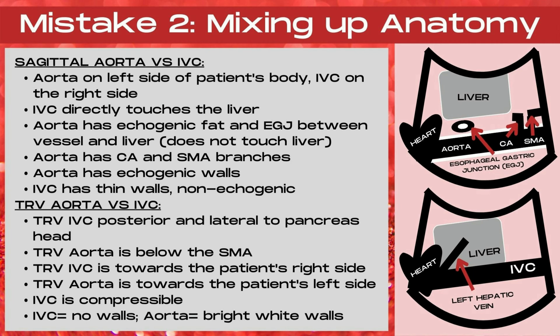Also look for the branches. The aorta has the celiac axis and also the superior mesenteric artery branches. The aorta is also going to have echogenic walls, while the IVC is going to have thin walls that are non-echogenic. We call this 'no walls' in ultrasound imaging.